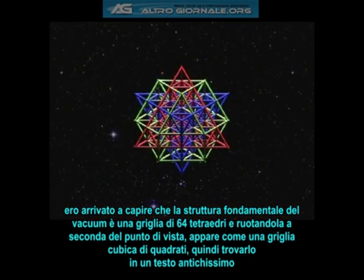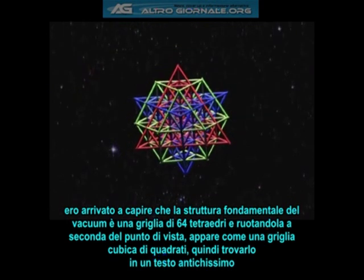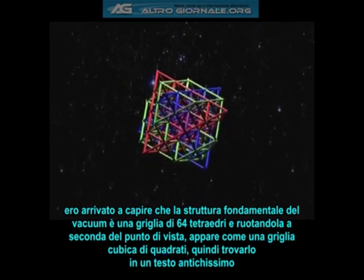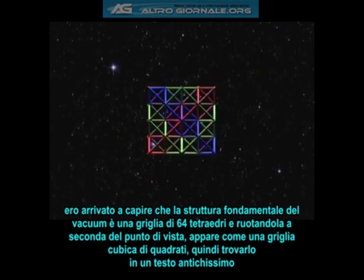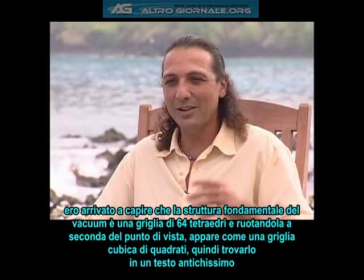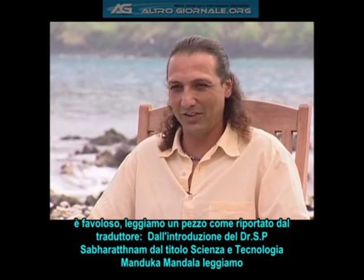Now, if you rotate a tetrahedron, depending on the angle at which you're looking at it, they define the dynamic of a cube, of a square. So to find this in a very ancient text is an amazing thing.